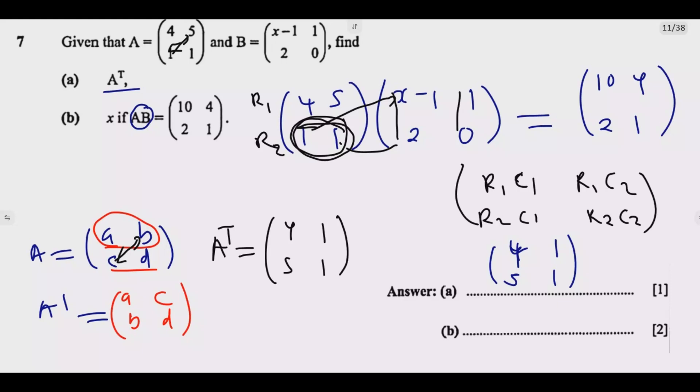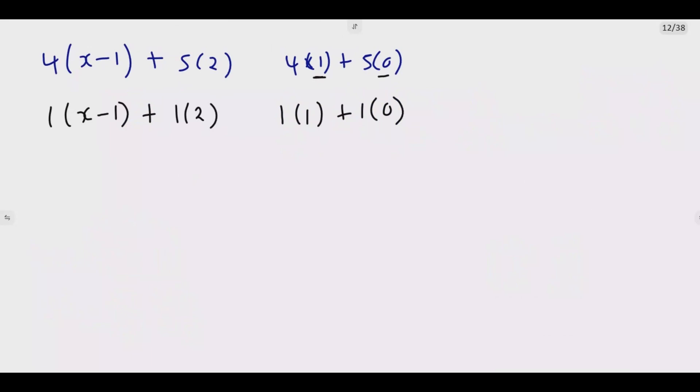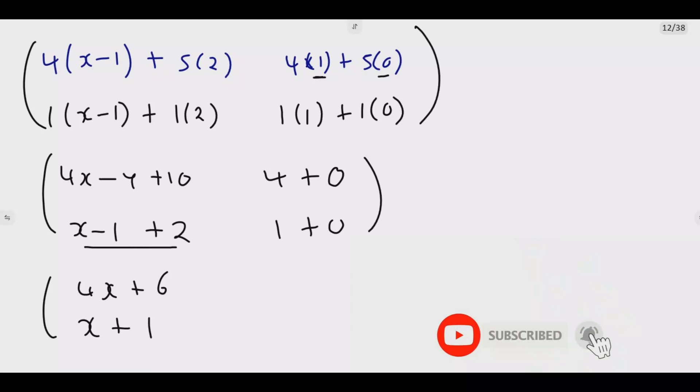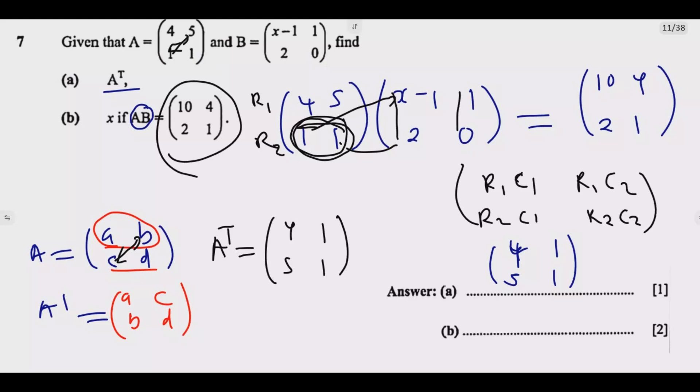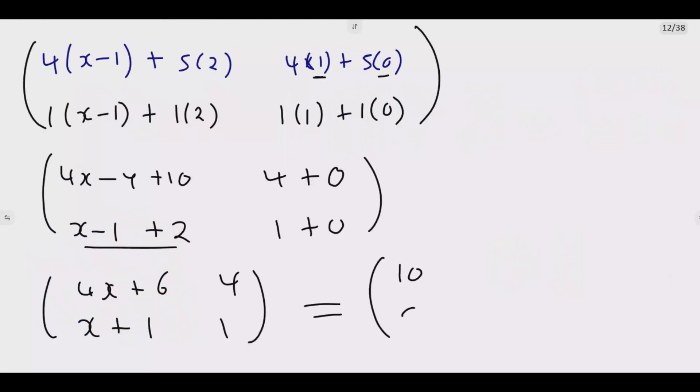When we simplify this, we need to equate them to this number. We are going to have 4 times X is 4X, 4 times negative 1 is negative 4, 5 times 2 is 10. Then 4 times 1 is 4, plus 5 times 0 is 0. Then 1 times X minus 1 is X minus 1, plus 1 times 2 is 2. Then 1 times 1 is 1, plus 1 times 0 is 0. So this simplifies to 4X plus 6, 4, X plus 1, 1.